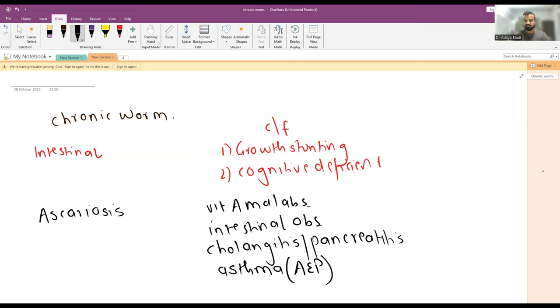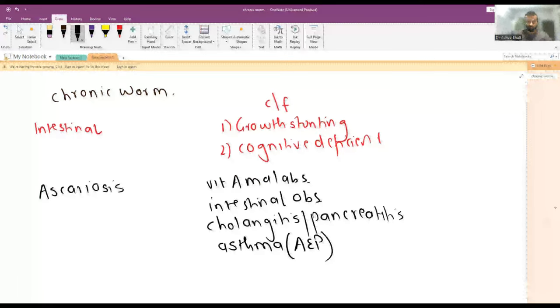Along with this, the larva can cause asthma, acute eosinophilic pneumonitis - one variant of acute eosinophilic pneumonitis due to migrating larvae. The most common location of ascariasis is in the jejunum and ileum.